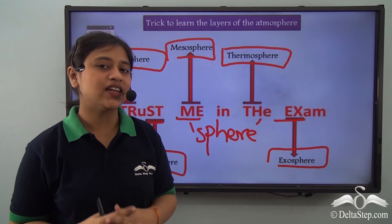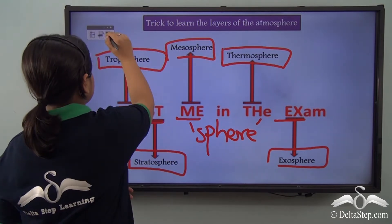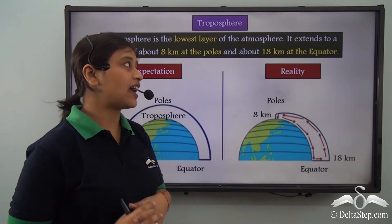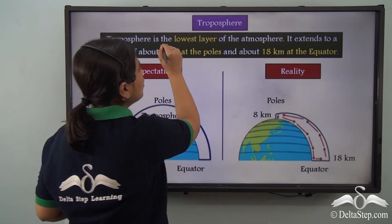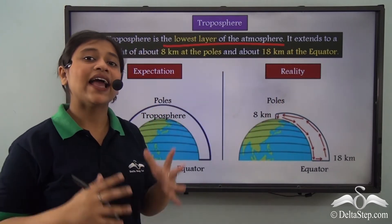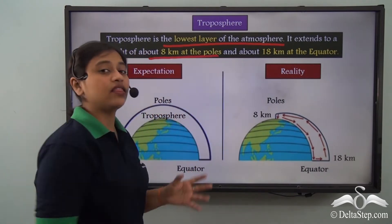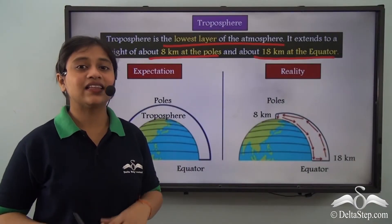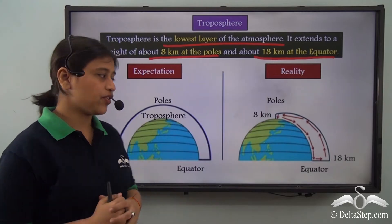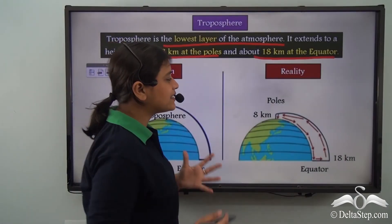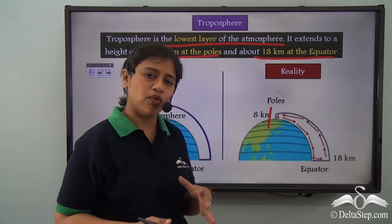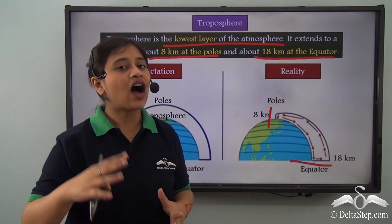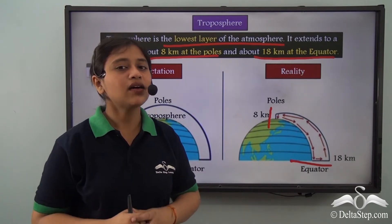This way, we remember the name of the layers in order. Talking about the very first layer — the troposphere — it is the lowest layer of the atmosphere and it extends up to eight kilometers at the poles and to eighteen kilometers at the equator. The altitude is higher at the equator while lower at the poles.